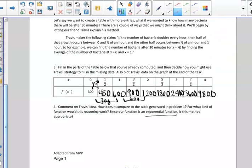So let's go back down to number four. Since our function is an exponential function, we were asked to determine if Travis's method was appropriate. Travis's thinking is actually linear, so therefore Travis's thinking is not actually appropriate for the bacteria count.